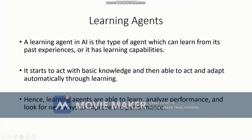A learning agent in AI is the fifth type of agent. It can learn from its past experience and has learning capabilities. The agents we have learned till now perform actions based on some history or knowledge base and current state — they do not learn. If they commit a mistake, they don't know how to improve. But the learning agent has the capability of improving and learning from its mistakes — that is how it differs from the rest of the agents.